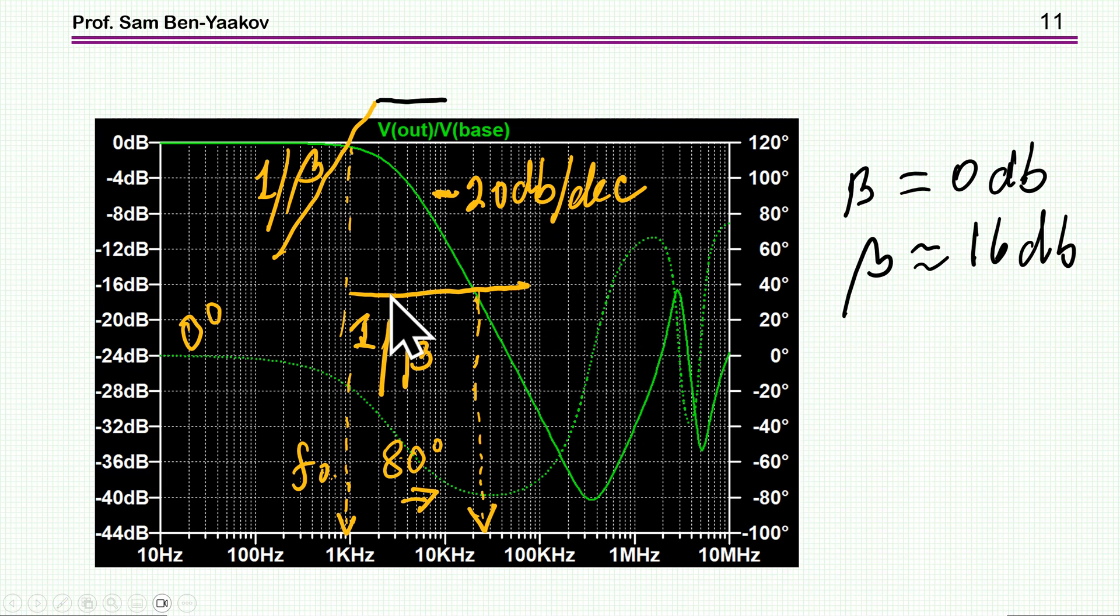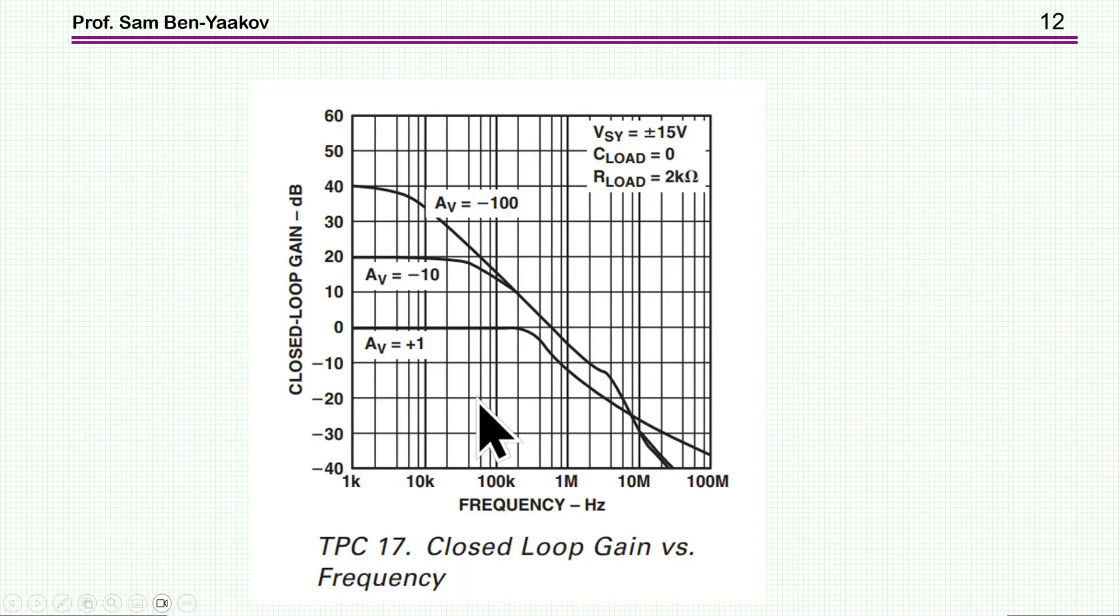So, as I've said, there are actually two possibilities, two practical possibilities. One to cross here with this 1 over beta. One to cross here. There is another, or a third possibility, with a sort of class 3 compensation, in which the 1 over beta will go like this. I'm not going into it. The circuit is simple, so I will use this one or this one. Now, as far as this possibility, then we need a gain, which is beta. 1 over beta is about, let's say, 20 dB. So, we need a gain of 10 at this frequency.